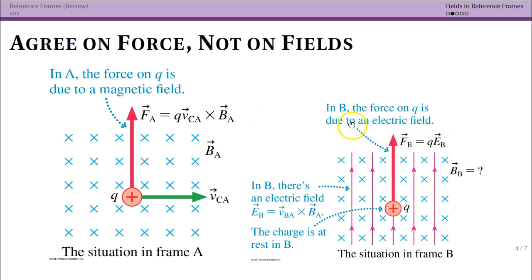In frame A, the force is due purely to the magnetic field. In frame B, the force is due to the electric field. There is a magnetic field in frame B too — students sometimes mistakenly think only one type of field exists in each frame — but since velocity is zero, there's no magnetic force in frame B. Both observers agree on the force; they don't agree on what fields are present.